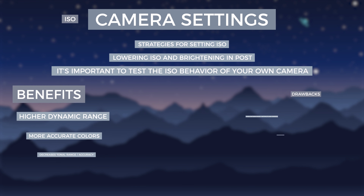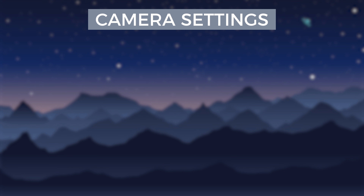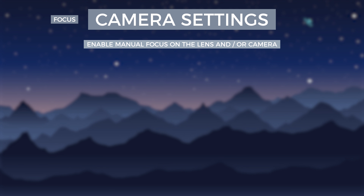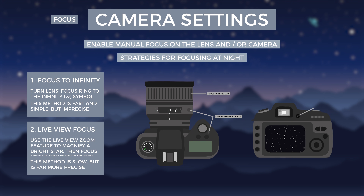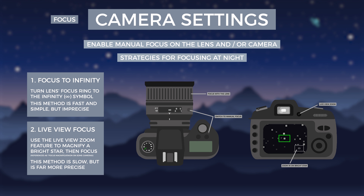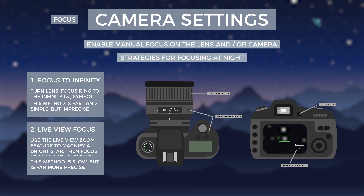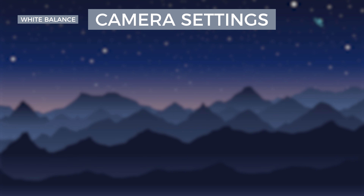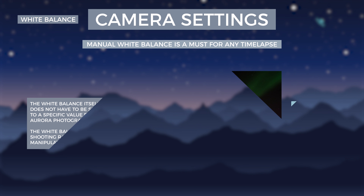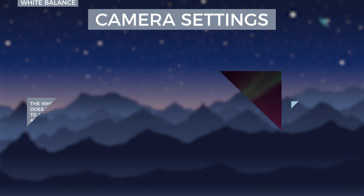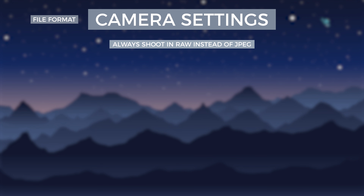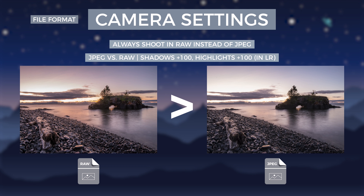Besides shutter speed, aperture, and ISO, other settings should be changed when taking photos of the Aurora. First, change the focus mode on your camera or lens to manual focus. To focus on the stars, either turn the lens focus ring all the way to infinity, or for more precise focus, enable live view and use the zoom button — pick a bright star and move the focus ring until the star becomes sharp. Make sure white balance is set manually, especially if you are shooting a time lapse, to prevent the camera from changing white balance between shots. Also, make sure that you shoot in RAW image format instead of default JPEG, as RAW files allow for non-destructive editing and easier recovery of blown highlights and crushed shadows.